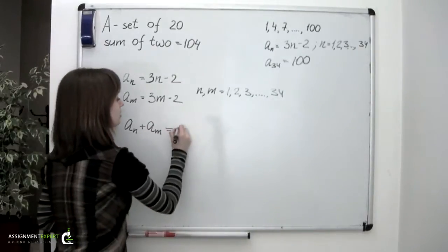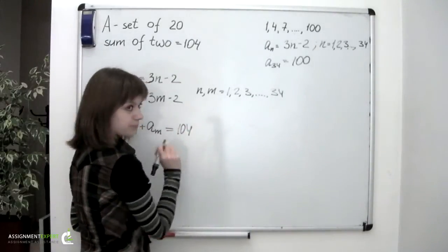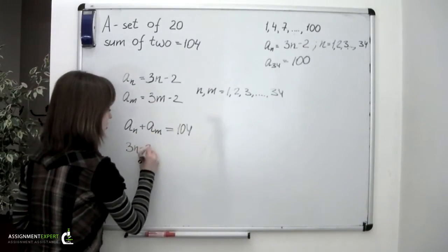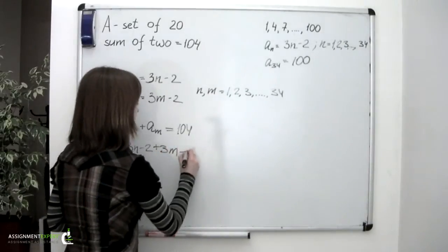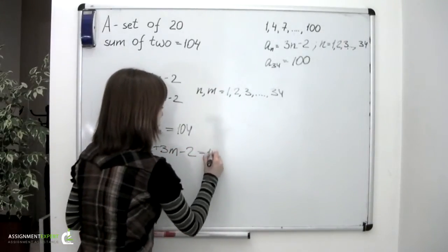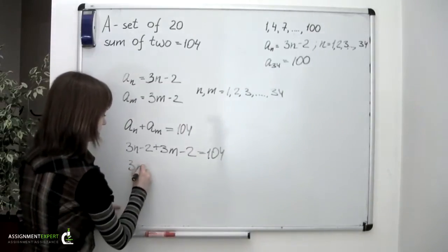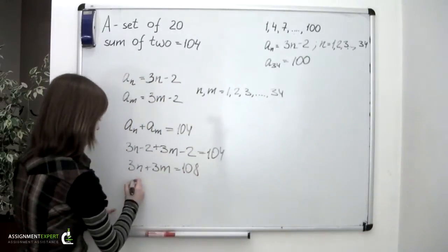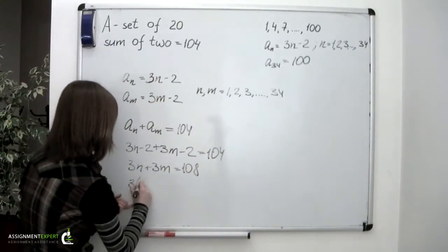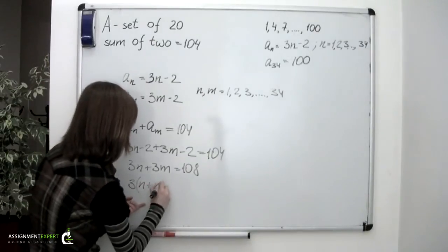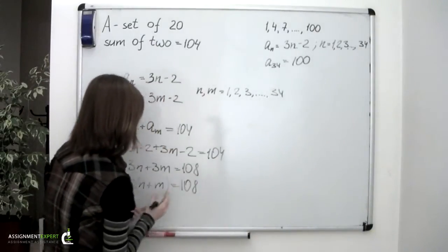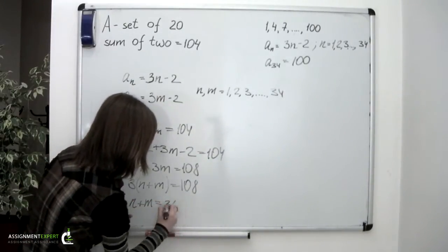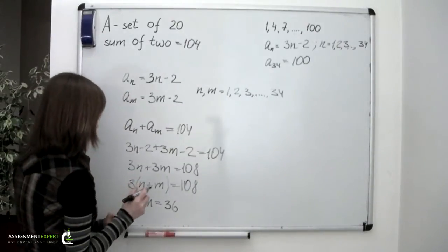And add them. We must obtain 104. If we substitute these expressions in, we would have 3n minus 2 plus 3m minus 2 equals 104. This simplifies to 3n plus 3m equals 108. If we factor out 3, we would have 3 times n plus m equals 108, or n plus m equals 36.